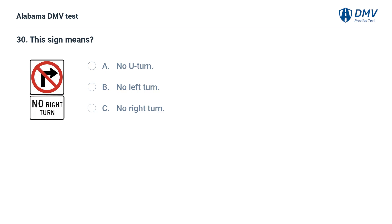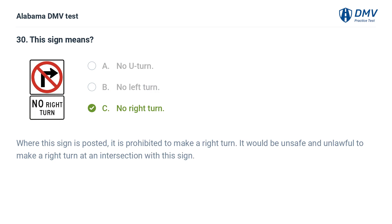This sign means: A. No U-turn. B. No left turn. C. No right turn. Correct answer: C. Where this sign is posted, it is prohibited to make a right turn. It would be unsafe and unlawful to make a right turn at an intersection displaying this sign.